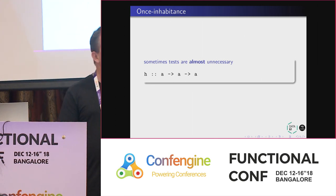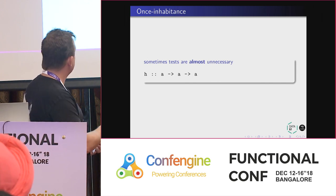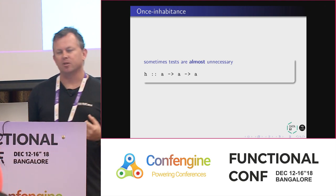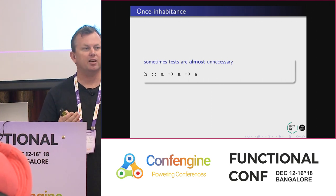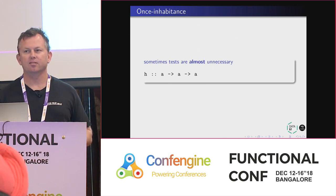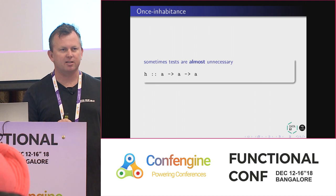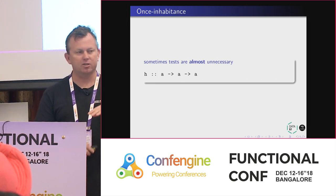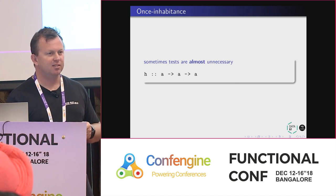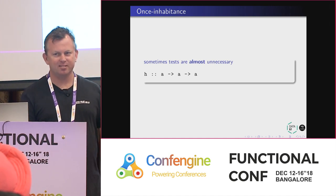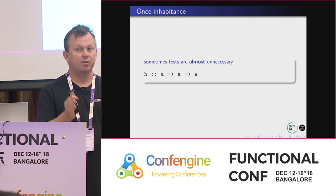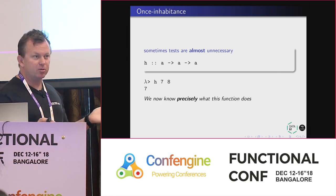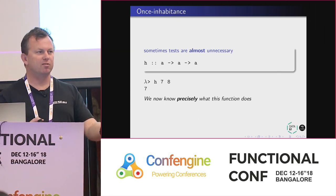Sometimes the types are almost but not quite sufficient. For a function A to A to A — just intuitively, how many functions of this type exist? Two — you're either going to return the first argument or the second one. So how many tests do you have to write? One. We just need to disambiguate which of the two functions was written. If I put in 7 and A and it returns 7, now I know which one it did.